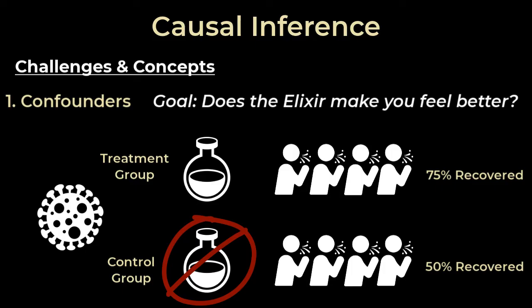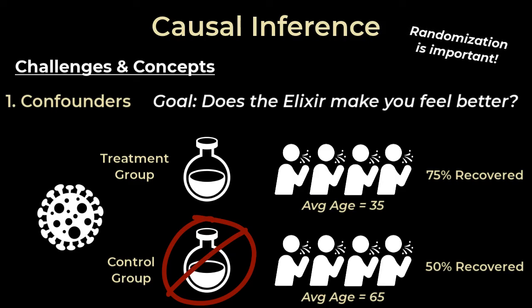Well, not necessarily. Because if we look at the experiment closely, the control group has an average age of 65 while the users in the treatment group have an average age of 35. This means the people in the treatment group probably could have recovered on their own even without the elixir. In this example, age is a confounding variable — a variable that we haven't controlled for and that can have some causal effect on whether a person recovers. This is exactly why when conducting A/B tests we randomize, in order to make sure that age and other potential confounding variables are equal between the two groups. Confounding variables are a challenge in causal inferencing that uses prior data — you need to be vigilant of these confounders and control them too.